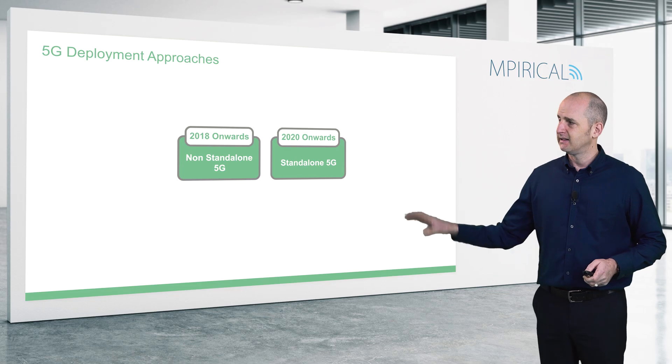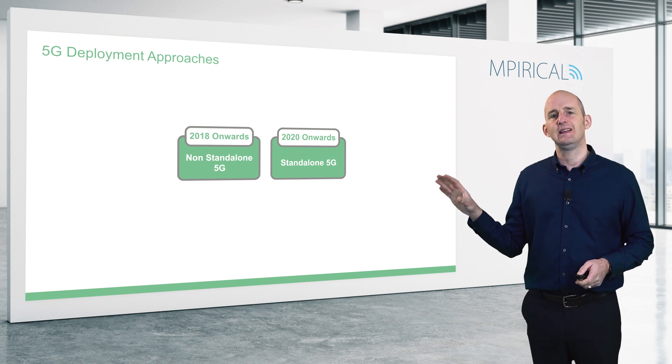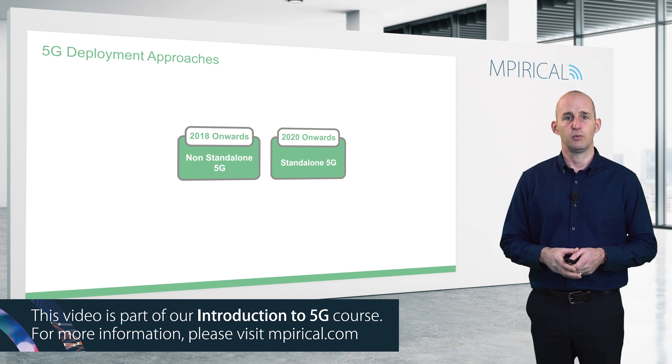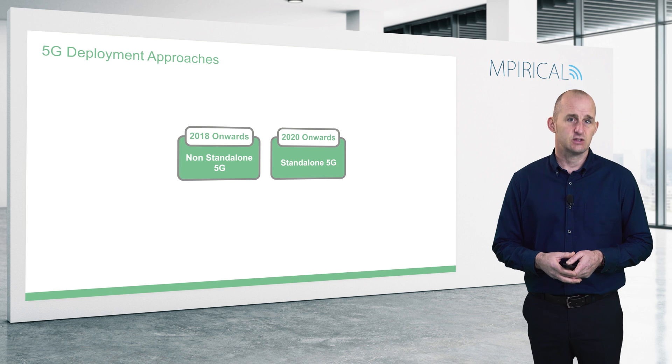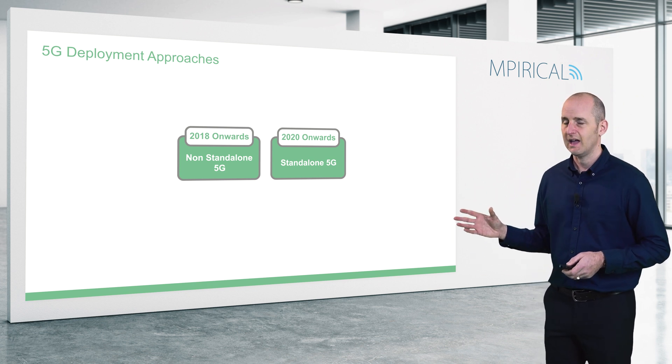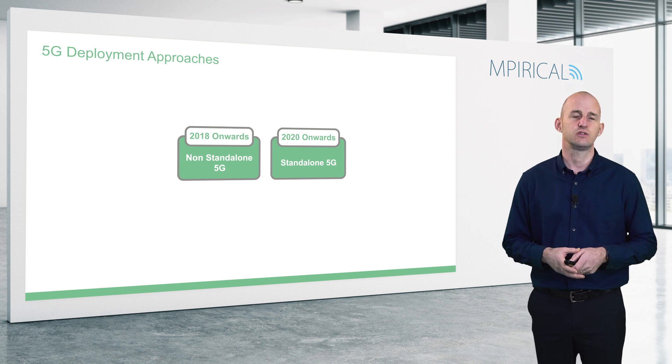In terms of 5G deployment, two main methodologies exist: non-standalone (NSA) and standalone (SA) 5G deployment. From 2018 onwards, the earliest deployments of 5G were based on non-standalone operation because this is the easiest way 5G can be brought to market by the mobile service provider. However, the problem is it only really delivers enhanced mobile broadband, particularly to the consumer market.